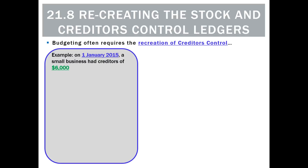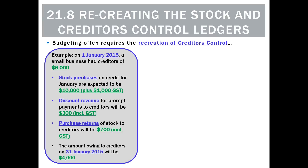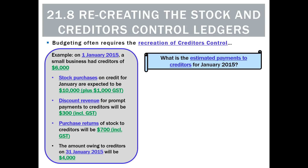Likewise, we might need to recreate creditors control. For example, on the 1st of January the business has creditors of $6,000, and during its budget they think there'll be stock purchases of $10,000 plus GST during January. Discount revenue is budgeted to be $300 including GST for promptly paying back some creditors. They think they'll return $700 including GST to creditors, and going forward expect a creditors balance of $4,000. So what is the estimated payments to creditors for January?